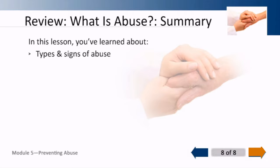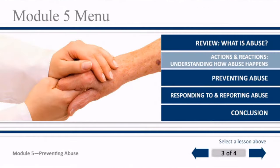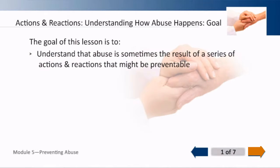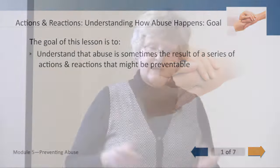So we've talked about the types and the signs of abuse. Let's connect this with the previous module that we talked about — actions and reactions. We need to understand that abuse is sometimes — not always, but sometimes — the result of a series of actions and reactions that could have been preventable. It could be your actions and the elder's response to that, or it can also be the elder's reaction and your response to it.